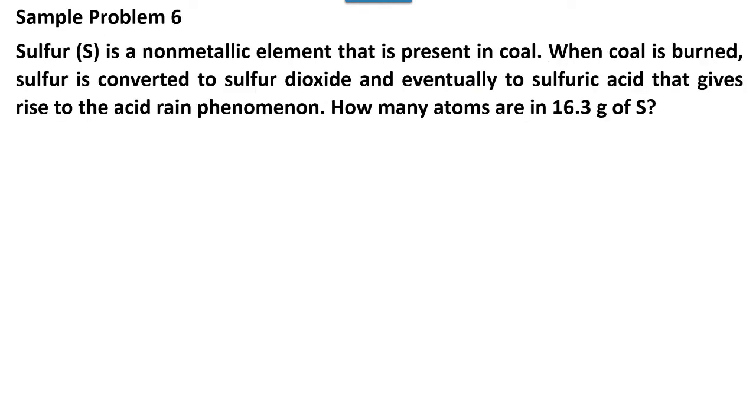Okay, let's have sample problem number six. Sulfur is a non-metallic element that is present in coal. When coal is burned, sulfur is converted to sulfur dioxide and eventually to sulfuric acid that gives rise to the acid rain phenomenon. How many atoms are in 16.3 grams of sulfur? So the given is mass of sulfur and we are looking for the number of atoms.